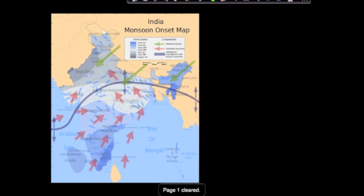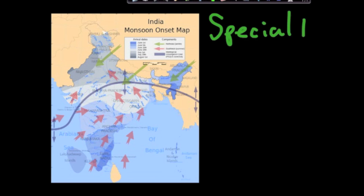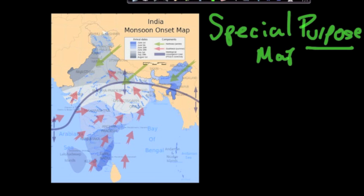This next slide is a special purpose map — not a political map, not a physical map, but a special purpose map. Its only purpose is to tell us about the Indian monsoon onset, and it covers both the winter monsoon and the summer monsoon. So there are in fact two monsoons.